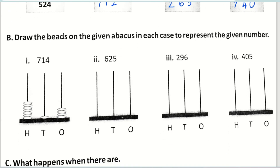Next, we need to draw the beads for the given number. The first one is done for you; we'll go for the next one. Before drawing the beads, write the place value — it would be easy for you to draw the beads. How many hundreds? Six hundreds — so six beads: one, two, three, four, five, six. How many tens? Two tens: one, two. And how many ones? Five ones: one, two, three, four, five.